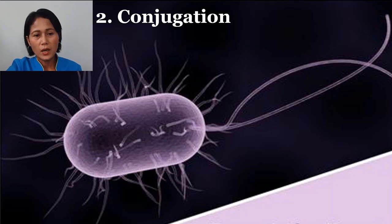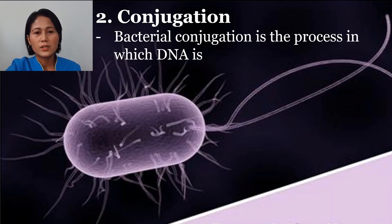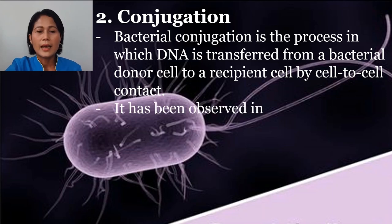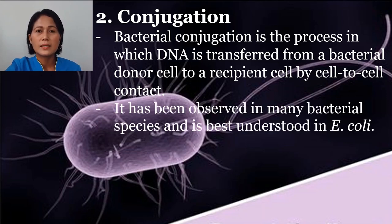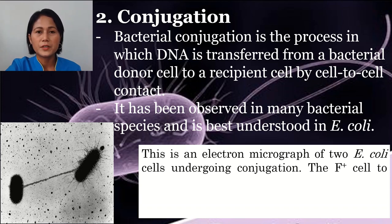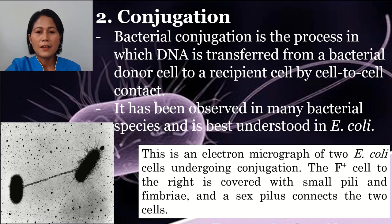Now let's go into conjugation. Conjugation is another process of horizontal gene transfer in which DNA is transferred from a bacterial donor cell to a recipient cell by cell-to-cell contact. It has been observed in many bacterial species and is best understood in Escherichia coli. Here is an electron micrograph of two E. coli undergoing conjugation. The F-plus cell is covered with small pili and fimbriae, and a sex pilus is needed to transfer genetic material from one cell to another.